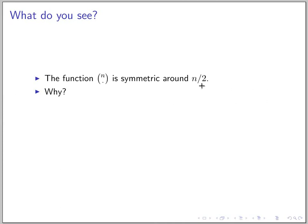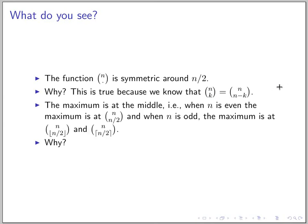Around n over 2. So n over 2 is in the middle. So the reason for that, why is that? We know that this is true because we know that n choose k equals n choose n minus k.